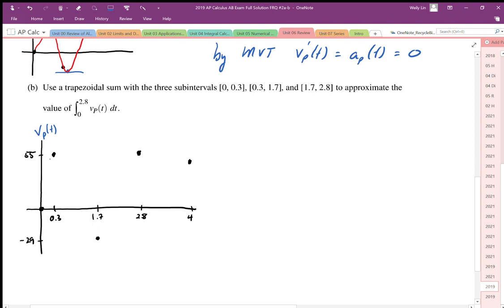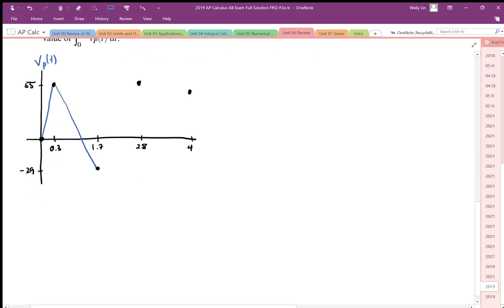So we're going to use this interval here, and then we're going to use this next interval here. So the trapezoidal sum is like that. And this interval here, from here to here.